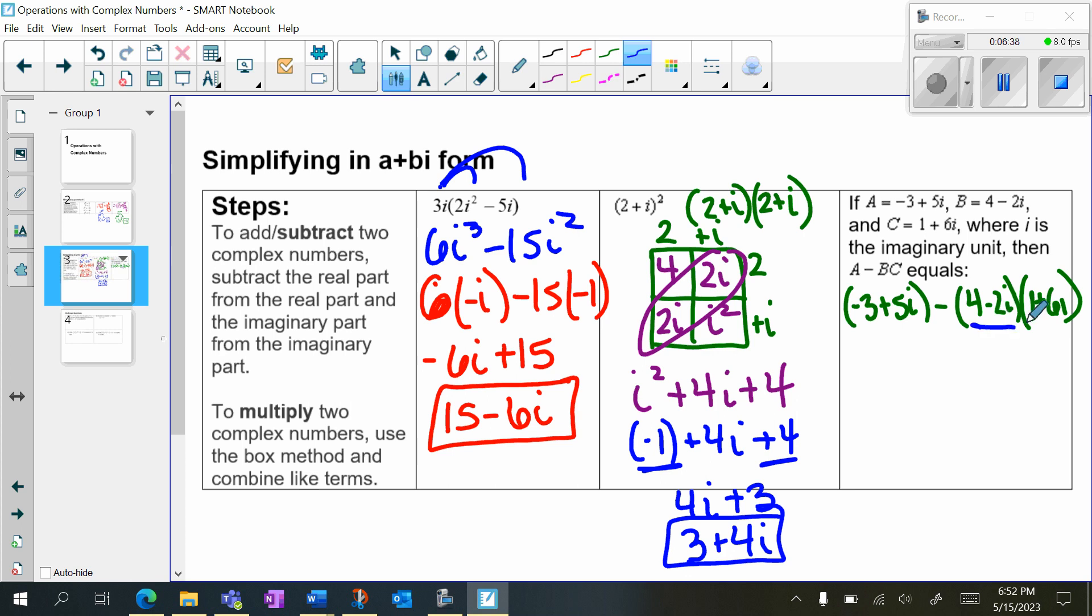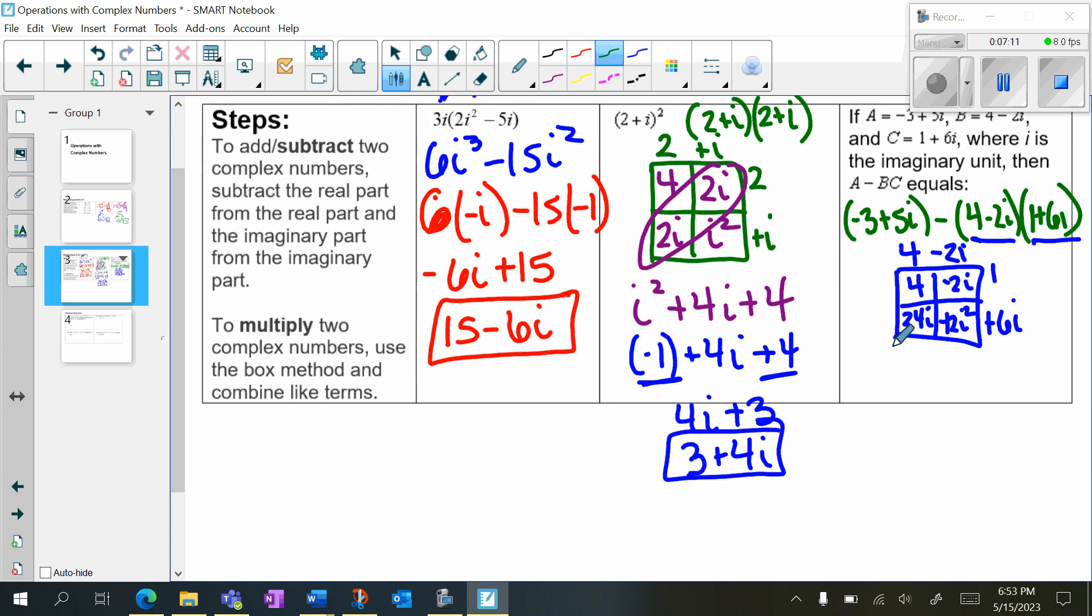Notice here, I have 2 binomials being multiplied, so I want to use the box method. So I'm going to redraw it here. So I'm going to have 4 minus 2i, 1 plus 6i. So 4 times 1 is 4. Negative 2i times 1 is negative 2i. 4 times 6 is 24i. And then negative 2i times 6i is negative 12i squared. Of course, we want to add on our diagonals. So I'm going to have 4 plus 22i, because I added 24i plus negative 2i, minus 12i squared.